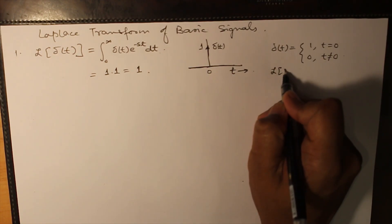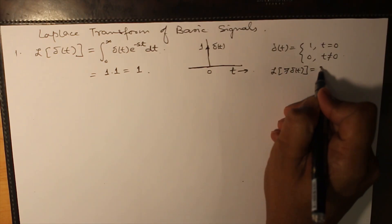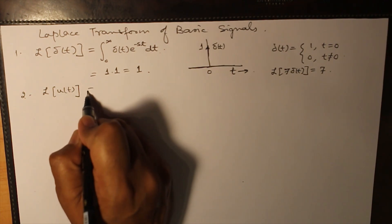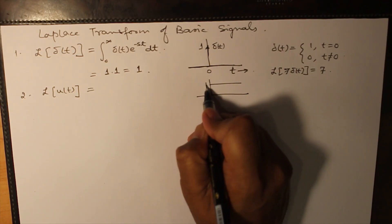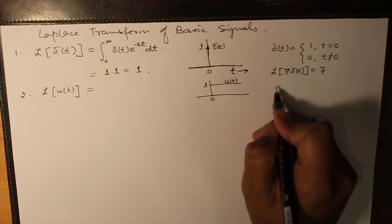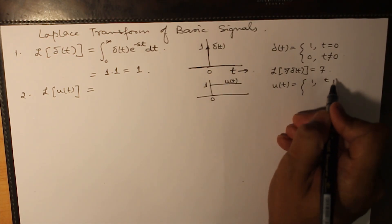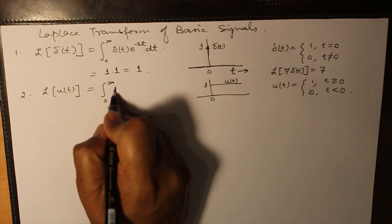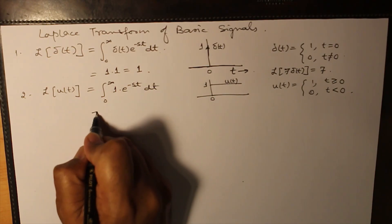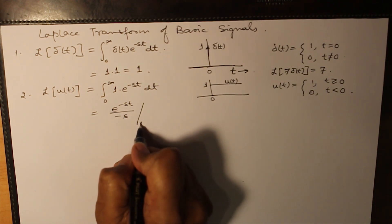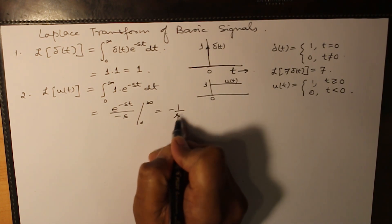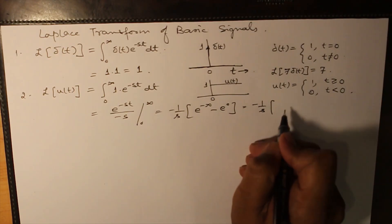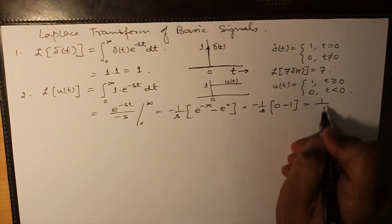If you have the Laplace transform of 7 delta(t), then obviously it will be equal to 7. Second is the Laplace transform of U(t), the unit step signal, having magnitude 1 for all time greater than or equal to 0 and 0 for time less than 0. So that becomes the integral from 0 to infinity of 1 times e raised to the power minus st dt. Simple integration gives e raised to the power minus st divided by minus s, evaluated from 0 to infinity, which gives minus 1 over s times (0 minus 1), giving 1 over s.